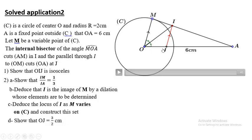C is a circle of center O and radius 2 cm. A is a fixed point outside the circle C, such that the distance OA equals 6 cm. For example, A is a fixed point, the distance is 6 cm. Let M be a variable point on the circle C.